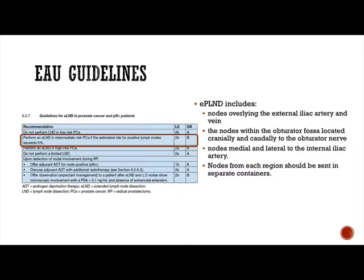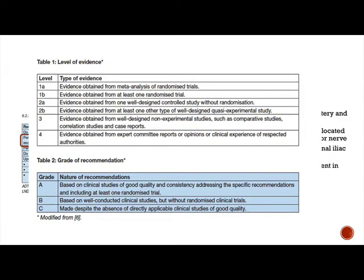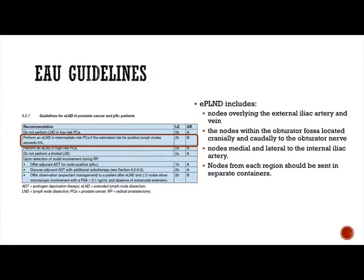The EAU guidelines are more specific. They say do not perform lymph node dissection in low-risk prostate cancer. For intermediate risk, perform an extended lymph node dissection if the nomogram risk of positive lymph node involvement is more than 5%. All high-risk patients should have extended lymphadenectomy — that's a level 2A, grade A recommendation. Their definition of extended PLND includes nodes overlying the external iliac artery and vein, within the obturator fossa including around the obturator nerve, and in and around the internal iliac. Each region should be sent separately for analysis.